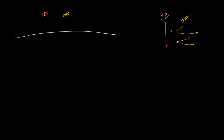But what would happen on the moon? What's interesting about the moon is we have no atmosphere — no air to provide resistance for either the brick or the feather. So what's going to happen? Your first temptation would be to use the universal law of gravity.